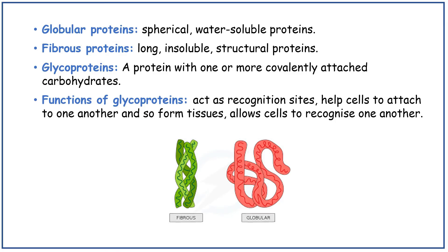Glycoproteins are proteins with one or more covalently attached carbohydrates. Functions of glycoproteins: they act as recognition sites, help cells to attach to one another and so form tissues, and allow cells to recognise one another.